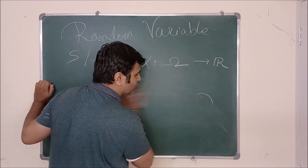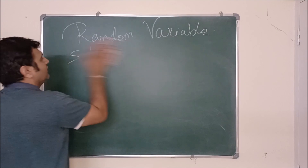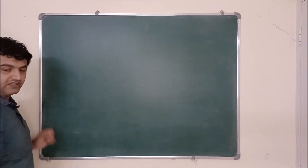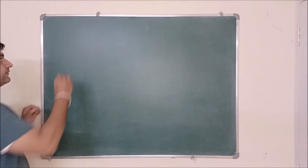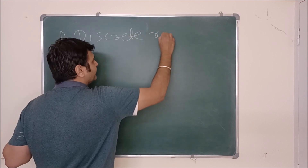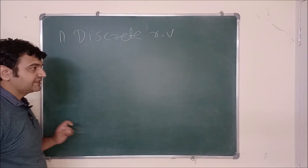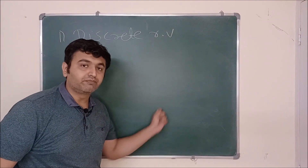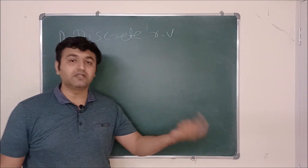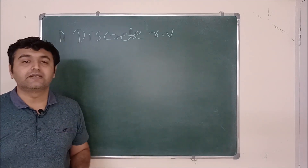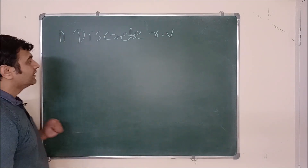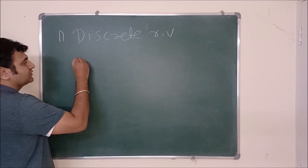There are three types of random variables. The first is called a discrete random variable. When the range of X — the output of X — is finite in number or countable, meaning you can count the values, then such a random variable is called a discrete random variable.